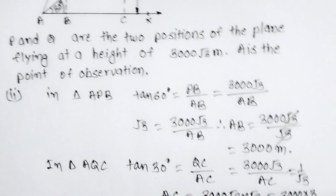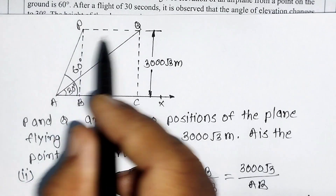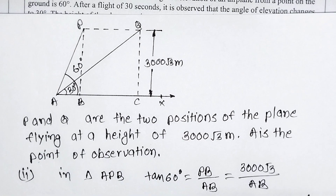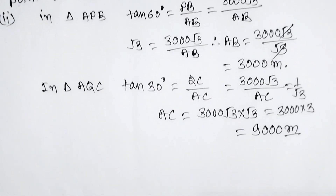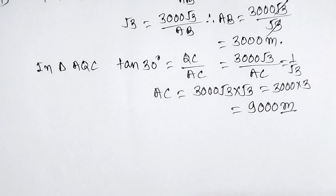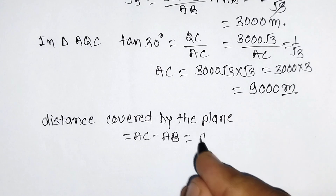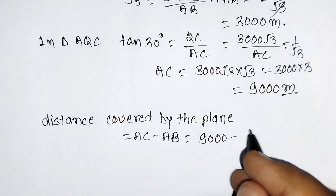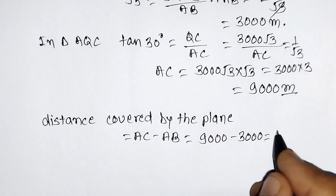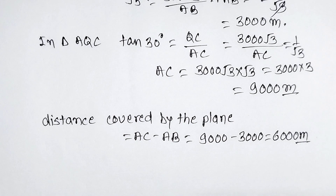Now, the question asks for the distance traveled from point P to point Q. Distance traveled by the plane = AC − AB = 9000 − 3000 = 6000 meters. So the plane covers 6000 meters in 30 seconds.